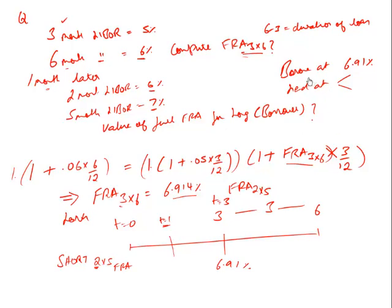By going long the original and short the new FRA, whatever I borrow goes into that lending and my position is secured because my borrowing rate is fixed. Once I fix the lending rate too, there is no further risk. I borrow at 6.91% and lend at a fixed rate. Let's find that lending rate — it will be the rate of a 2×5 FRA, and we solve it the same way.